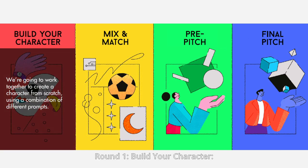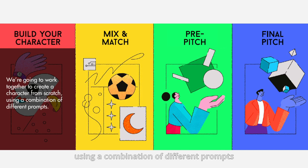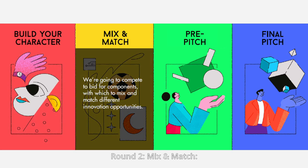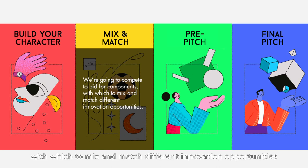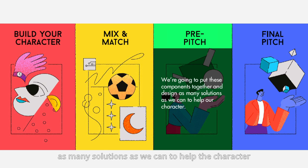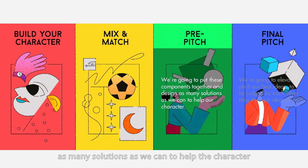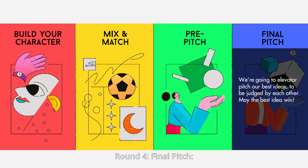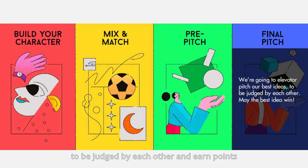Round one: build your character. We will work together to create a character as a team using a combination of different prompts. Round two: mix and match. We will compete to bid for components with which to mix and match different innovation opportunities. Round three: pre-pitch. We will put these components together and design as many solutions as we can to help the character. Round four: final pitch. We will elevator pitch our best ideas to be judged by each other and earn points.